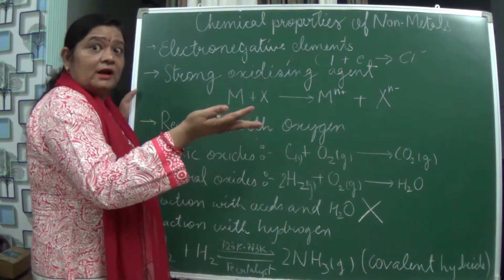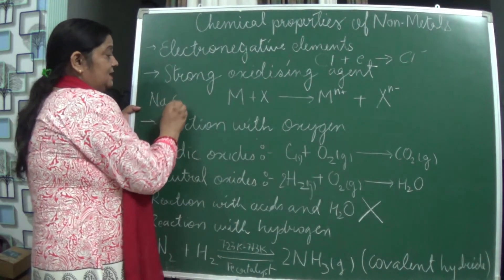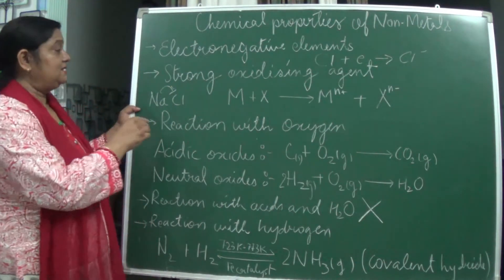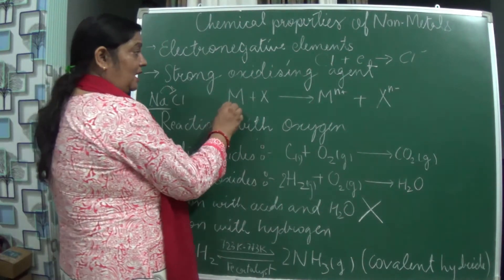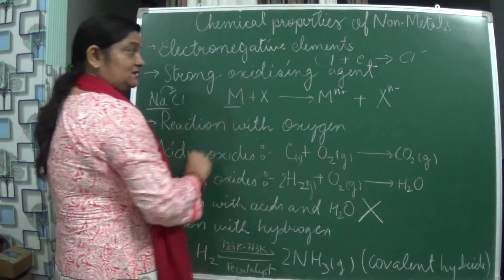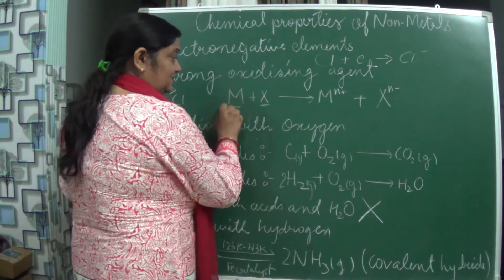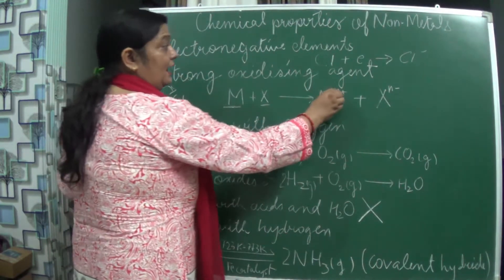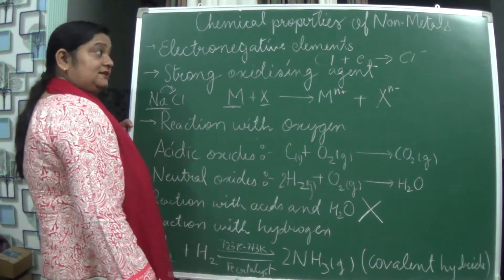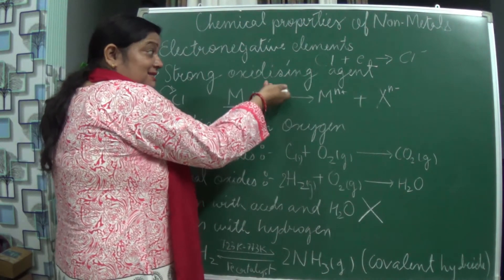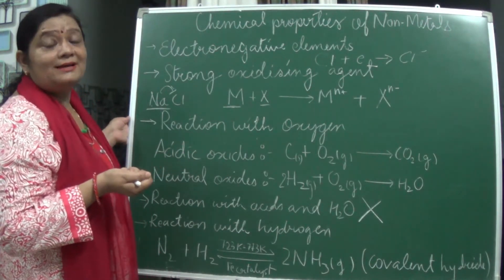They are oxidizing the metal which is with them, like in NaCl. This Cl is taking the electron, and as a result it is oxidizing this sodium. So in general reaction, we can write: M (metal) reacts with X (non-metal), and the non-metal oxidizes the metal, making it a positive ion and becoming a negative ion. As it has the tendency to take the electrons, they are strong oxidizing agents.